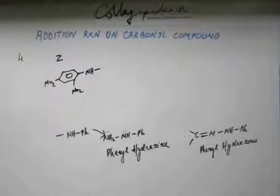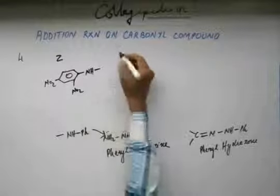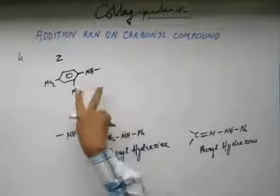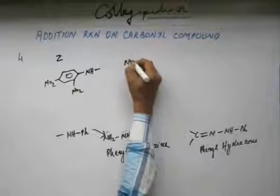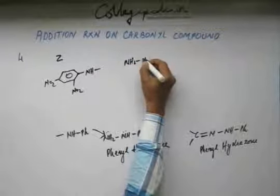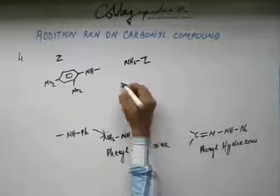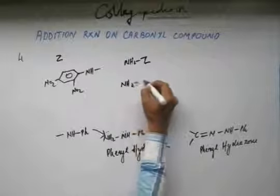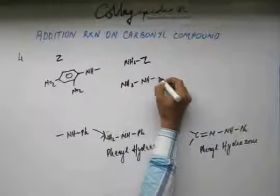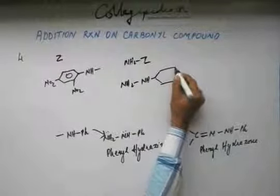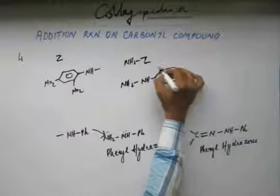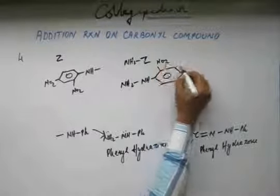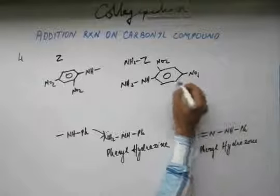Now, this Z, this Z can be this. This can be 2,4-dinitrophenyl. If the compound, when this is Z, then NH2-Z, how will NH2-Z look like? NH2-Z will look like this and this will be called as 2,4-dinitrophenylhydrazine.